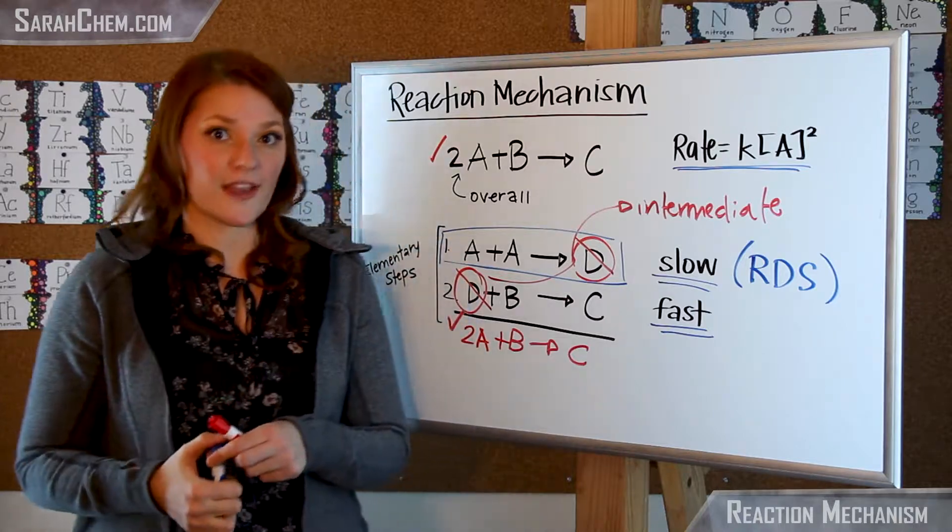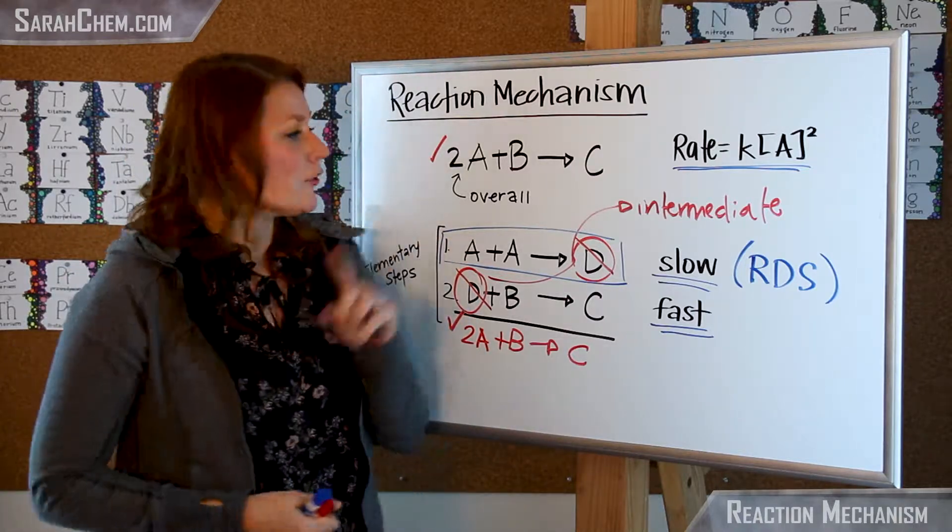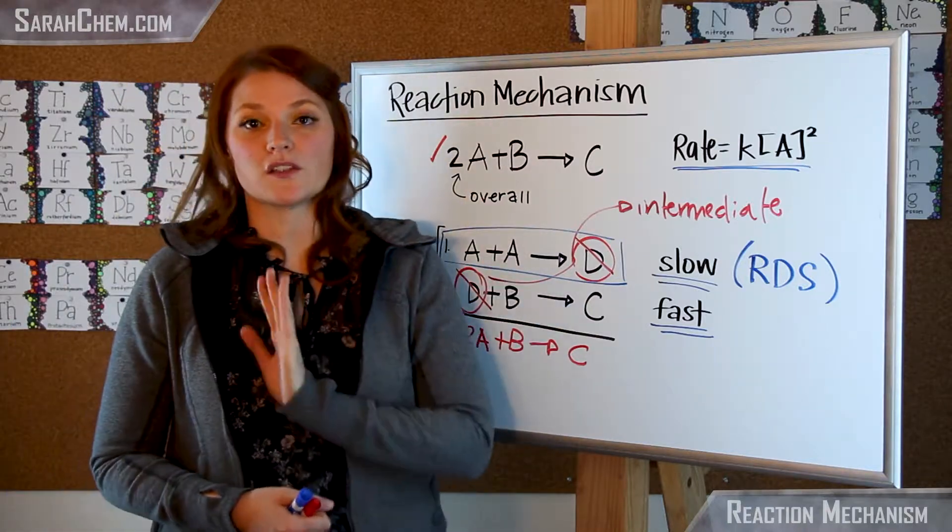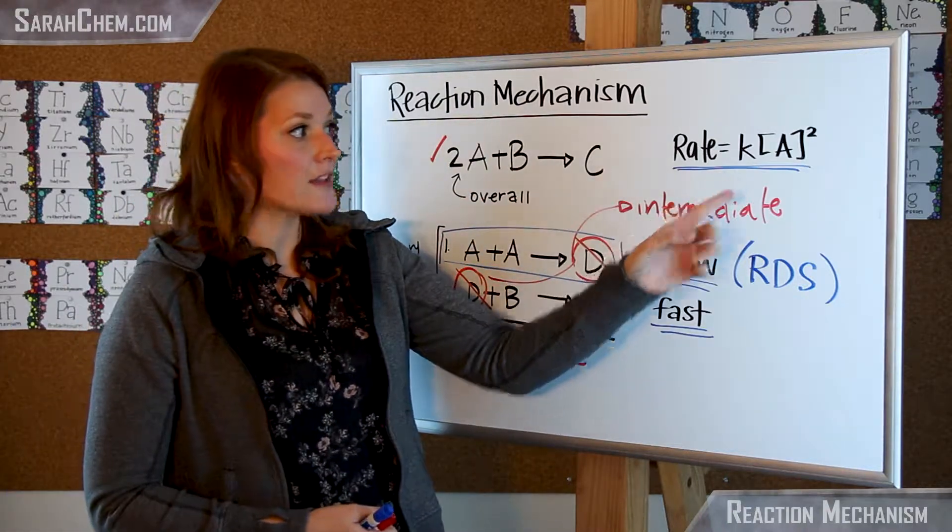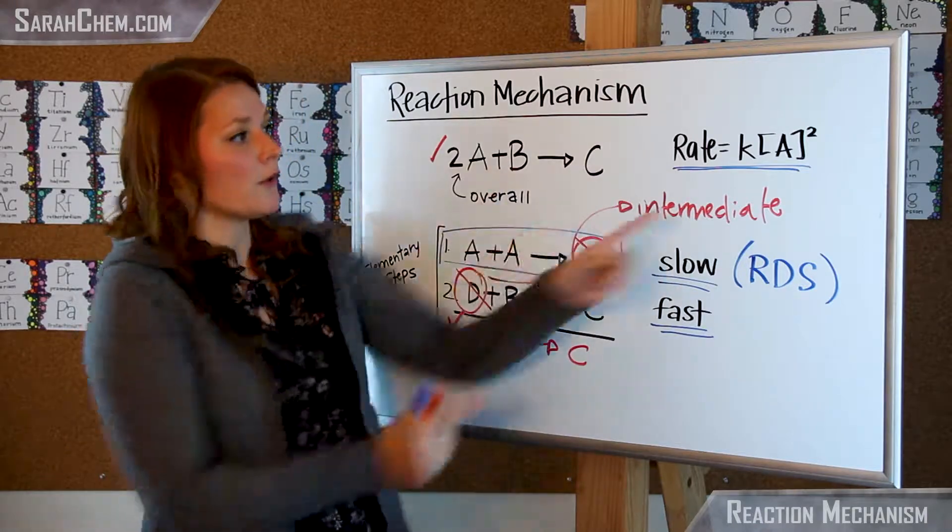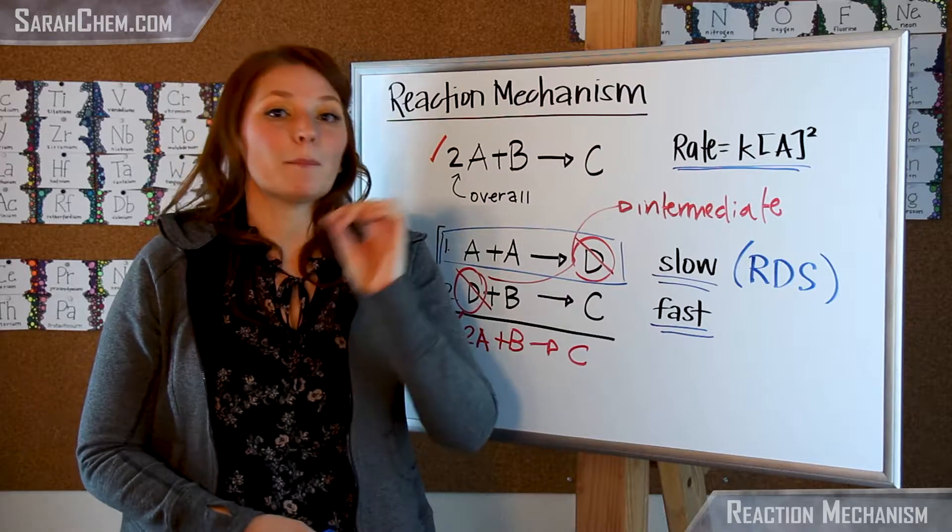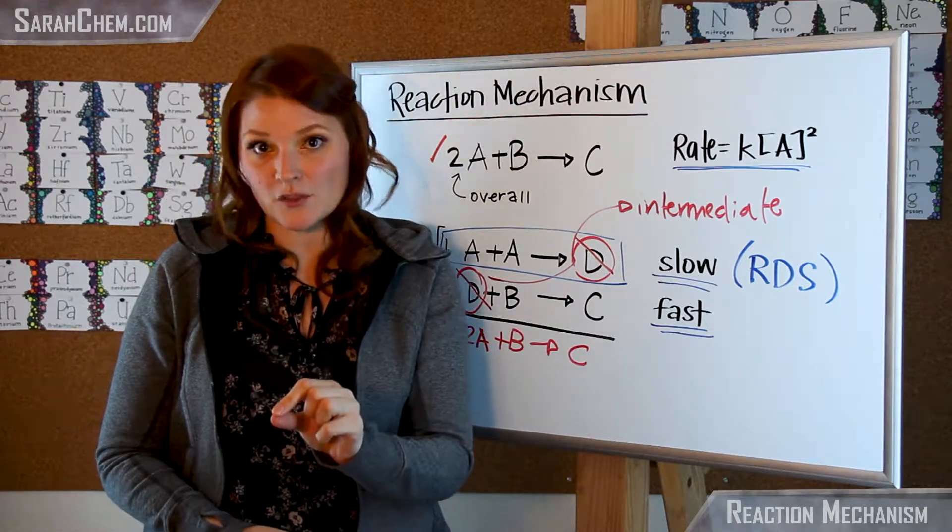So now a few things. Remember that when you're talking about a rate law, you cannot use the coefficients in the overall balanced equation to figure out what the rate law is. Right here, we'd have a B with a coefficient of 1, but there's no B there. When you're talking about elementary steps, you can use the coefficient.